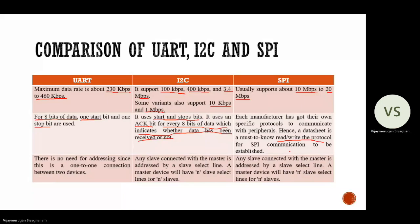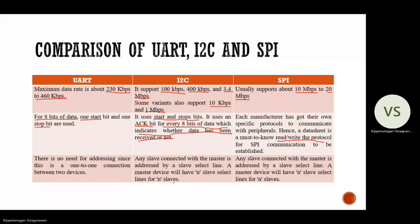The last point covers addressing. In UART, there is no need for addressing since it is a one-to-one connection between two devices. In I2C, any slave connected with the master is addressed by a slave select line; a master device will have n slave select lines for n slaves, and one or more master devices control their respective slave devices. In SPI similarly, any slave connected with the master is addressed by a slave select line, with n slave select lines for n slaves.